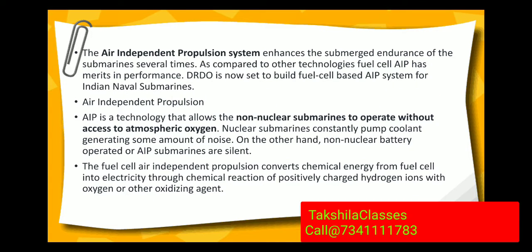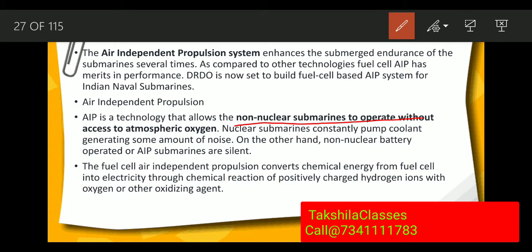Air Independent Propulsion (AIP) system enhances the submerged endurance of submarines several times, allowing non-nuclear submarines to operate without access to atmospheric oxygen. Fuel cell AIP technology has merits in performance. DRDO is now set to build a fuel cell-based AIP system for Indian Naval Submarines. Nuclear submarines generate noise due to coolant pumping, whereas non-nuclear battery-operated or AIP submarines are quieter. Remember: AIP is for submarines.